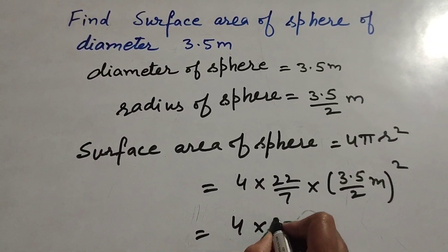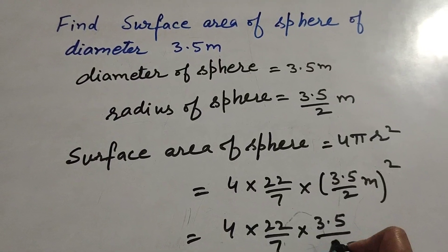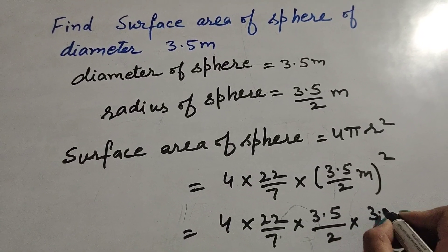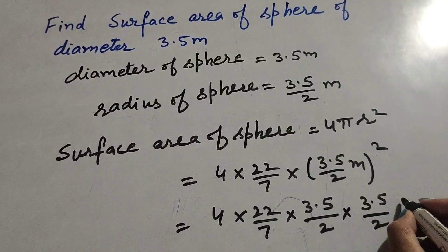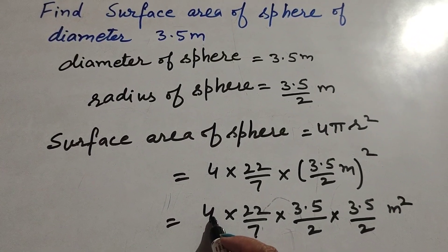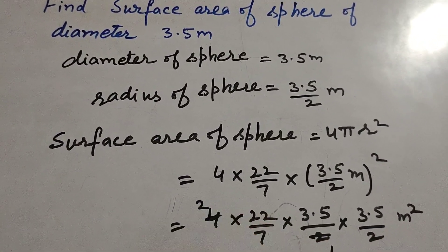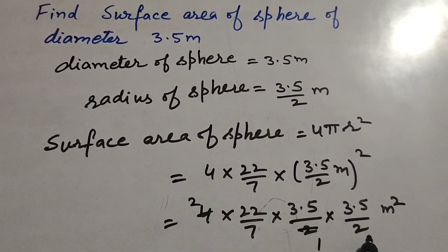So it is equal to 4 into 22 over 7 into 3.5 over 2 into 3.5 over 2 meters squared. 4 is divided by 2, 2 ones are 2, 2 2s are 4. Again 2 and 2 both are divisible by 2.